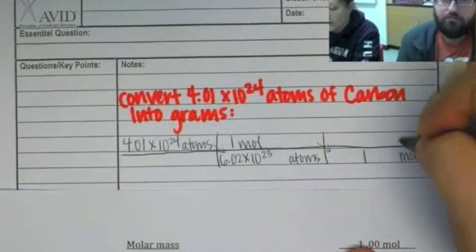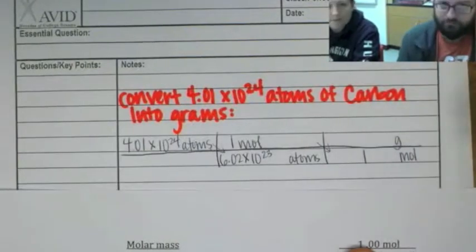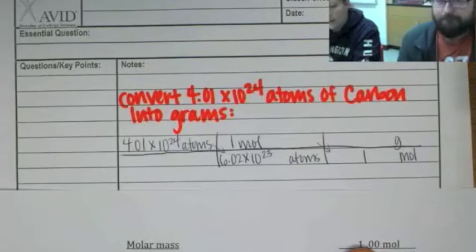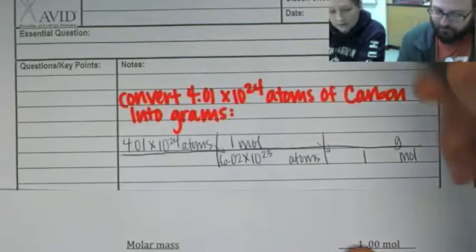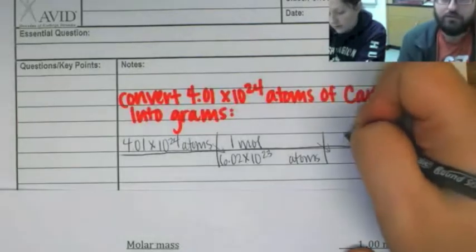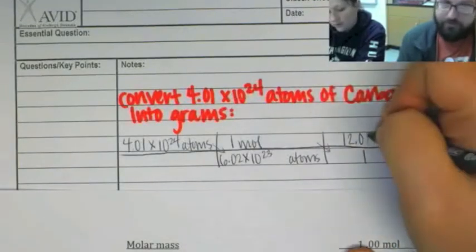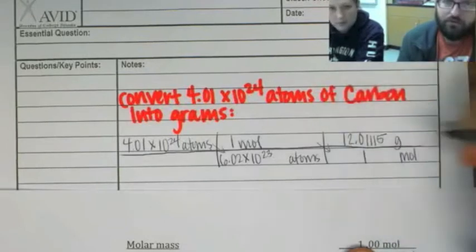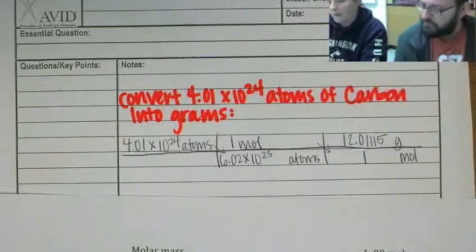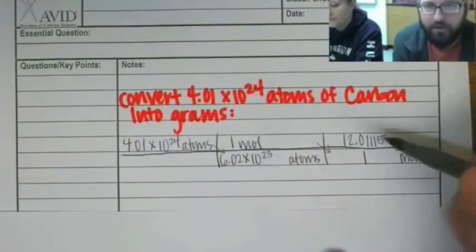So I want grams on top. That's what I'm looking for, right? And I look that up on the periodic table. Right. And it is 12.0? 12.01115. Okay. Do I have to use all those numbers? No. Okay. You're just being fancy? Yes. Just being really accurate here.